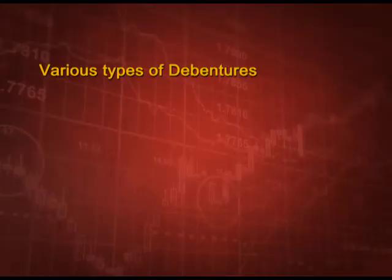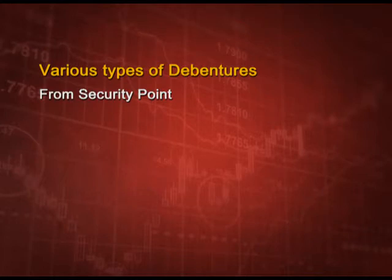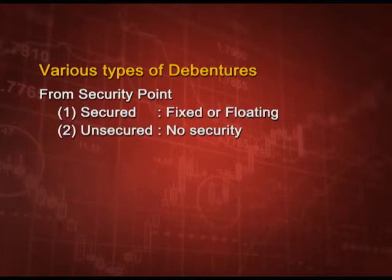What are the various types of debentures? From a security point of view, debentures can be secured or unsecured. They are secured when there is a fixed or floating charge on assets, and unsecured when there is no security. Fixed charge means a particular asset is secured, and floating charge means a charge on all the assets of the company.